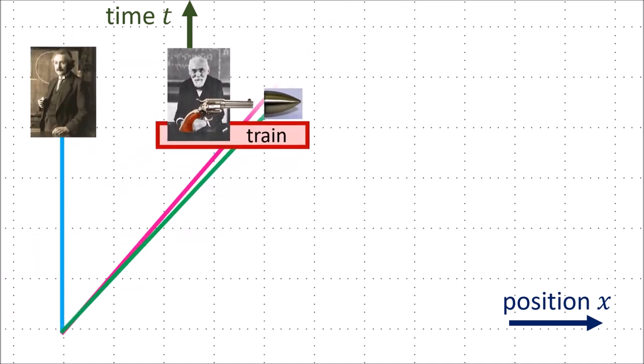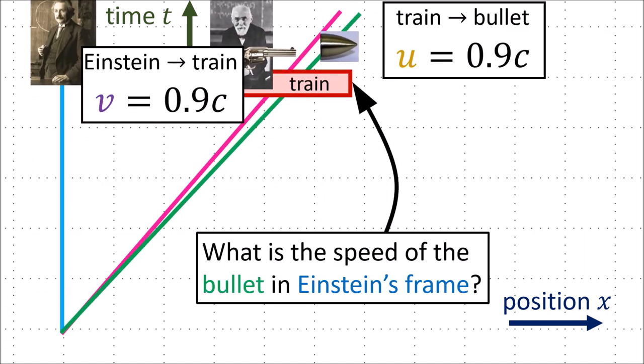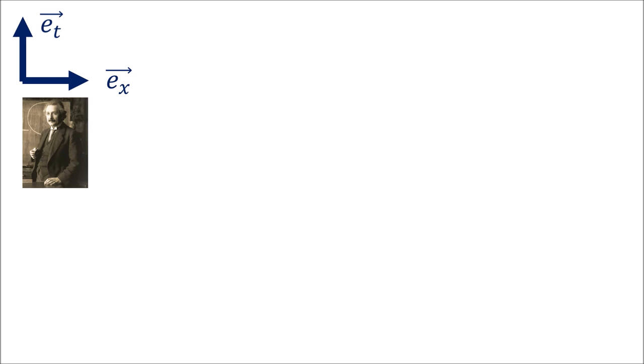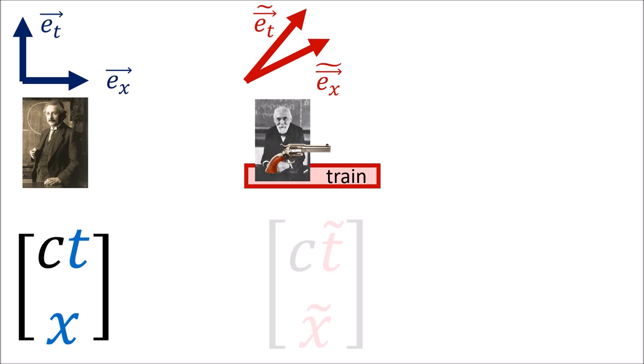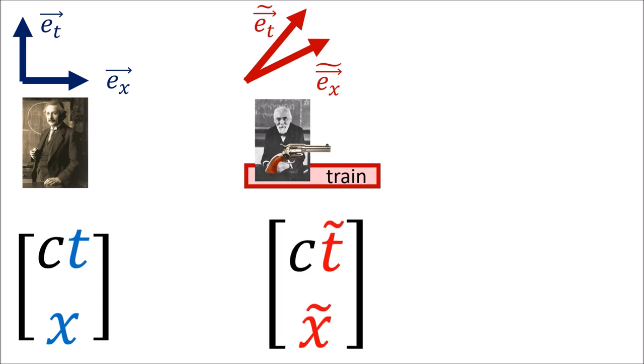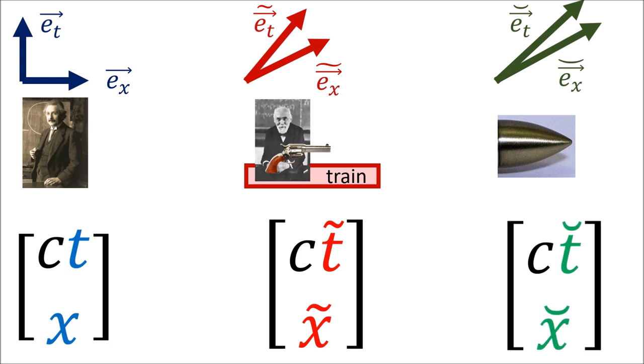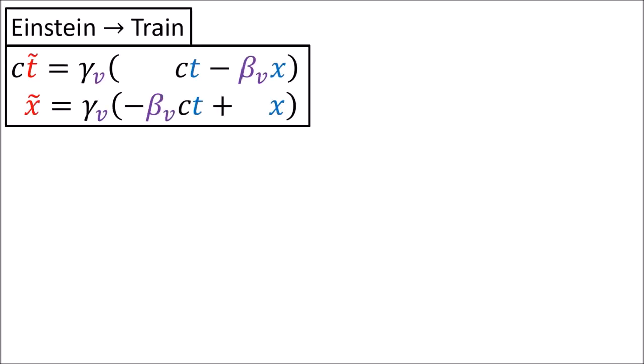Now let's see how velocity addition works in special relativity. Since we're working in special relativity, Einstein uses the spacetime coordinates ct and x. The train uses spacetime coordinates ct-tilde and x-tilde, and the bullet uses coordinates ct-smile and x-smile. We'll start with two Lorentz transformations. The first changes from Einstein's frame to the train's frame — changing ct and x into ct-tilde and x-tilde using velocity v, the velocity of the train.